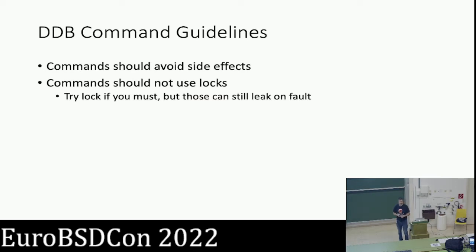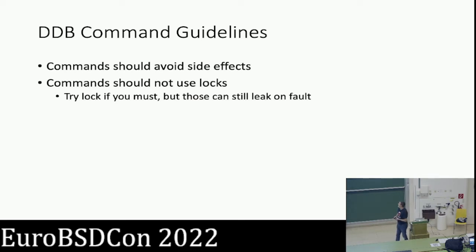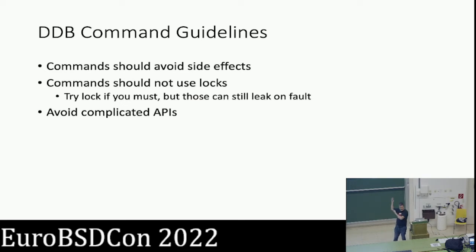If you really have to use locks, use try-locks because you can't block. One example of a command that breaks many of these rules is one I added many years ago to kill a process — use at your own risk. It will try-lock the process and kill it, which in very limited cases means you can recover by breaking into the kernel and kill a process that's hosed your system. In general, aside from things like that, you should avoid complicated APIs because they get you tangled up — complex APIs will likely require locks and make side effects that can't be safely unwound if things go sideways.